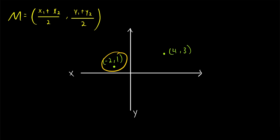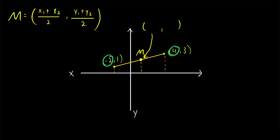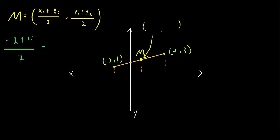Here we've got a point with coordinates negative 2, 1 and a point with coordinates 4, 3. Let's draw the segment that joins them. We want to find the coordinates of the midpoint M — the point that is halfway between these two points. The horizontal position of the midpoint must be halfway between the horizontal positions of the two points. So to find the x-coordinate of the midpoint, we just take the average of the x-coordinates: negative 2 plus 4 divided by 2. Negative 2 plus 4 is equal to 2, so this is 2 over 2, which equals 1. The x-coordinate of the midpoint is 1.